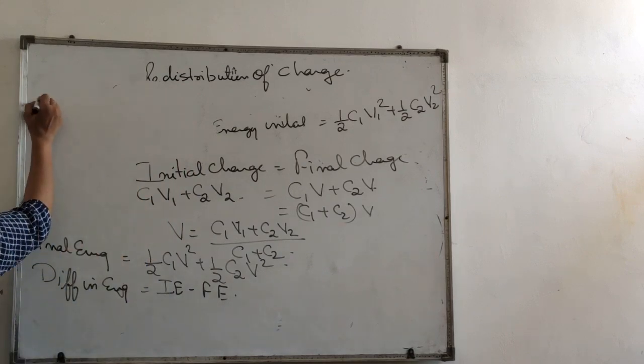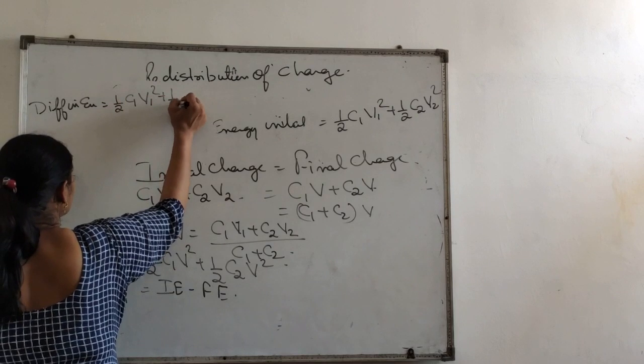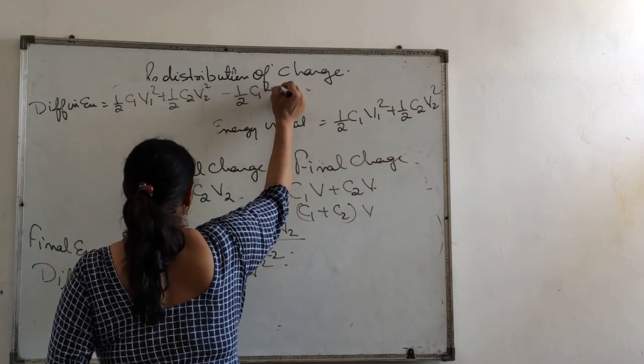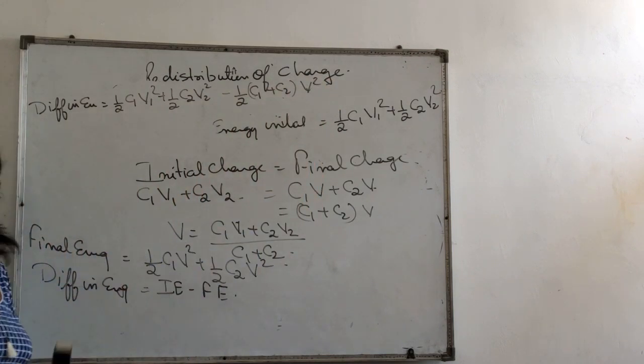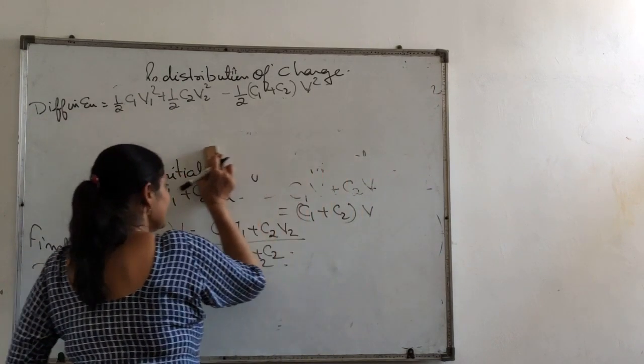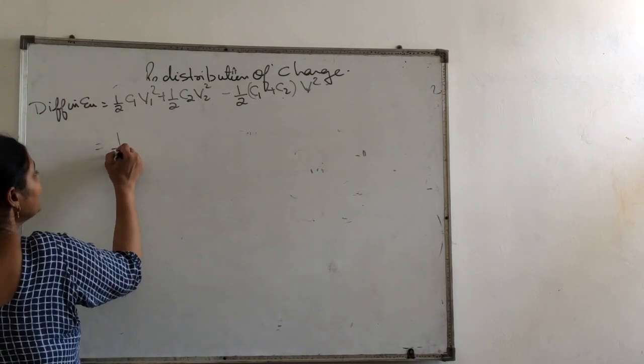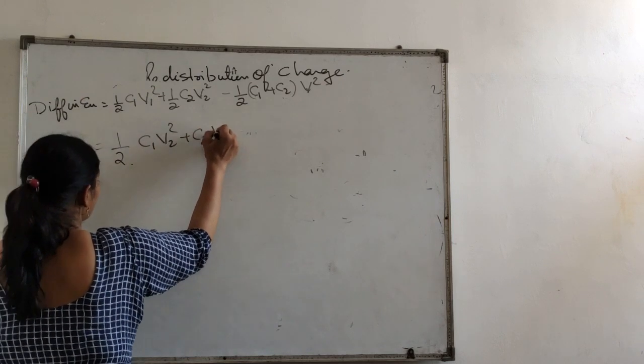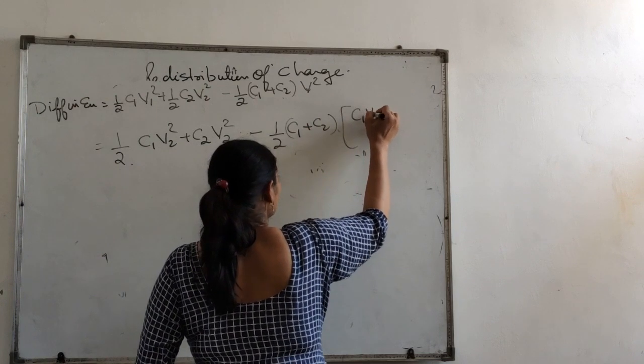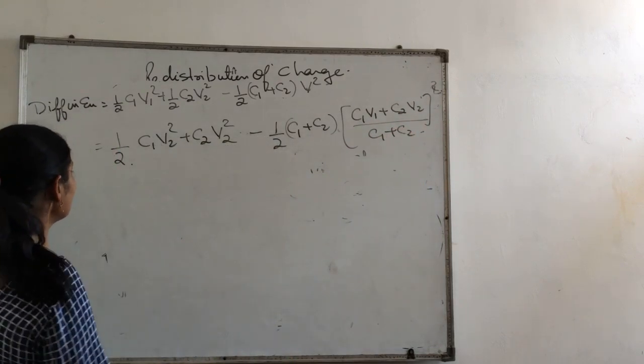Difference in energy will be initial energy minus final energy. So it will be half C1 V1 square plus half C2 V2 square minus final energy half C1 plus C2 into V square. I hope you all are able to see C1 plus C2 into V square.